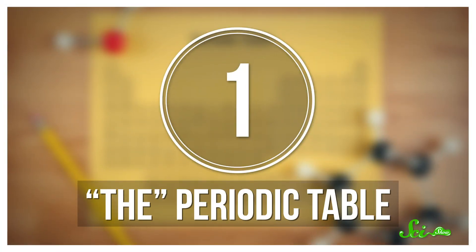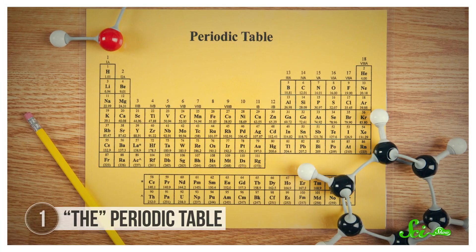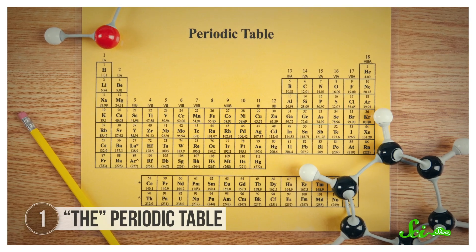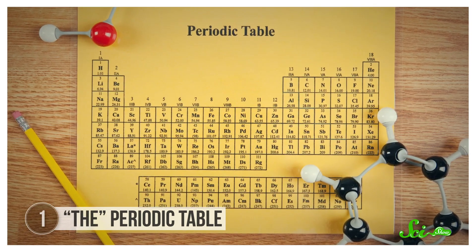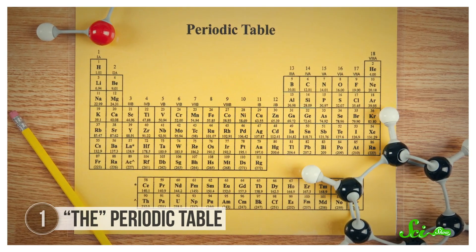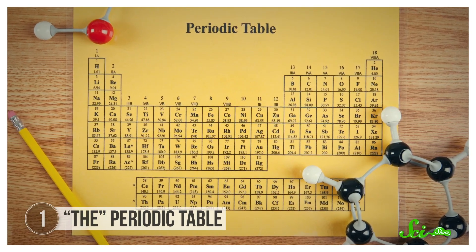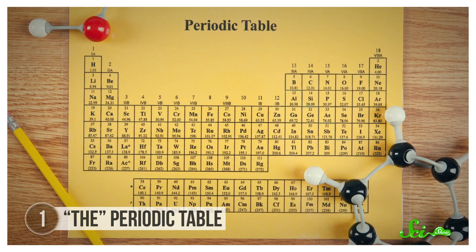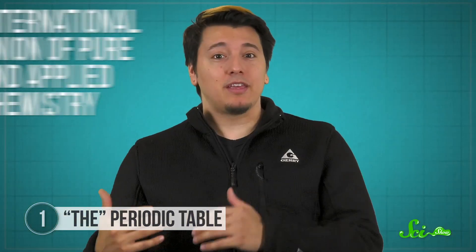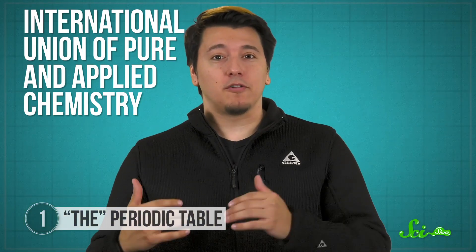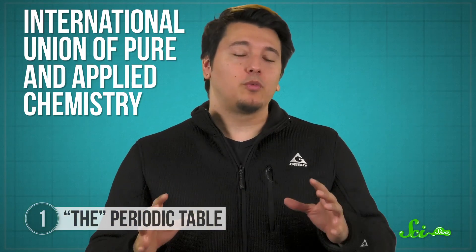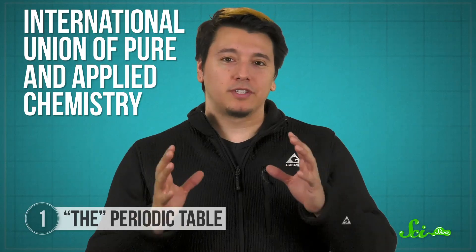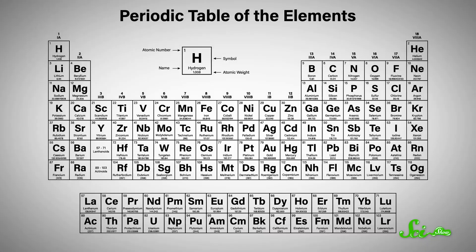There's one version of the periodic table you're probably picturing right now. Your high school chemistry teacher likely had it on their wall, and for good reason. The standard or long-form periodic table is really freaking useful. It's maintained by the International Union of Pure and Applied Chemistry, the worldwide body in charge of standardizing how chemists work.